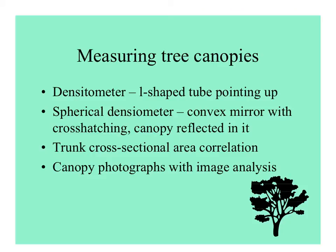Ecologists have come up with different methods for measuring cover of tree canopies using tools on the ground. One is a densitometer, which is an L-shaped tube pointing up. One I like a lot is the spherical densitometer — a concave, shiny surface with a grid on it — where you can see the whole canopy and count the number of squares covered. Some ecologists use the diameter of the tree because cross-sectional area of a trunk correlates with canopy size, and then more precisely, photographs of the canopy with a fisheye lens can be analyzed with an image analysis program.